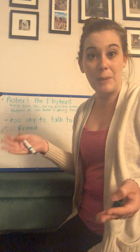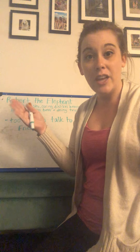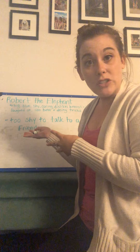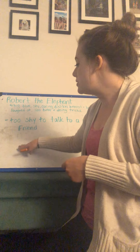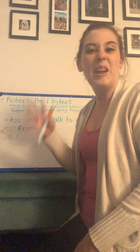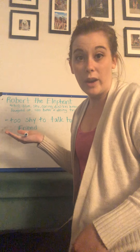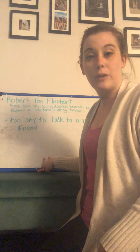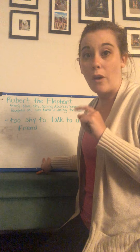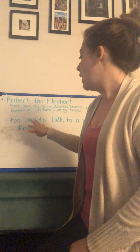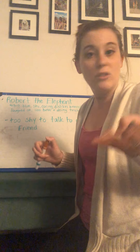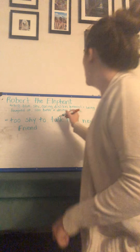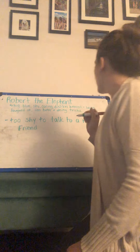But sometimes authors like to come up with lots of different ideas — do a brainstorm like we've done before — and then pick their favorite one. So I'm going to come up with a few different ideas for problems and then pick which one I think makes the best story. You can do the same, or maybe you've already thought of a really solid problem and you don't want to think about anything else. It's totally up to you. So one of the problems I think is Robert is too shy to talk to a new friend.